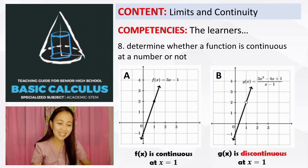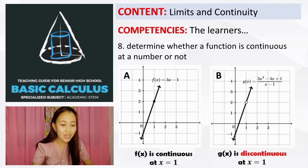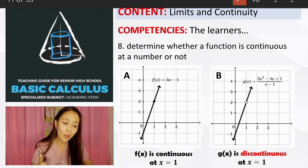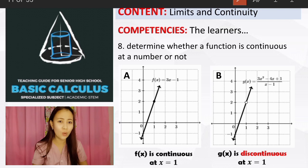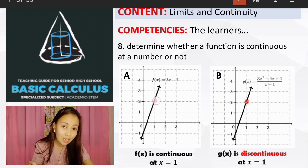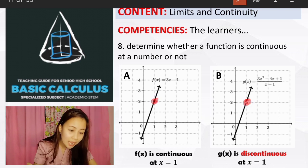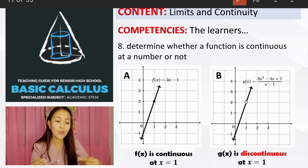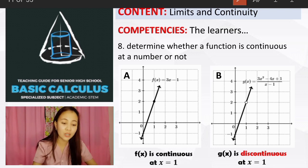The correct answer is graph A. The function f of x equals 3x minus 1 is continuous at x equals 1, while the function g of x in graph B is discontinuous at x equals 1. This is because at x equals 1, graph A has a solid point while graph B has a hollow or open circle. So x equals 1 is not included in graph B, meaning f of x is a continuous function but g of x is not.